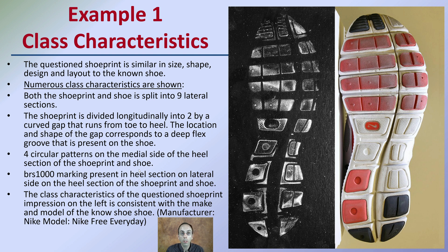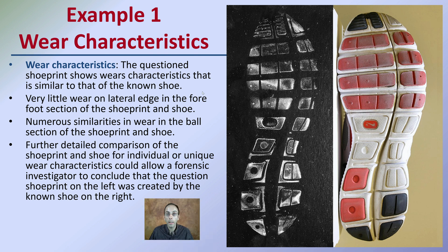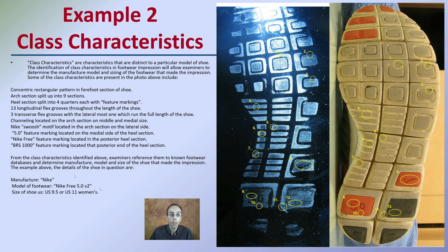So you want to get to wear characteristics — if you think things match on a class characteristic level, you want to move to wear characteristics, which gets into more individual evidence. The question shoe print shows wear characteristics similar to that of the known shoe — very little wear on lateral edges in the forefoot section. You're having a lot of wear in some areas and not so much in others. This is getting into more individual characteristics.